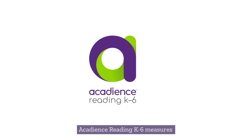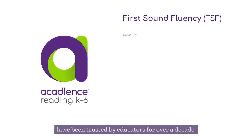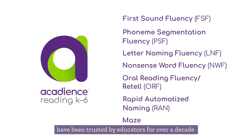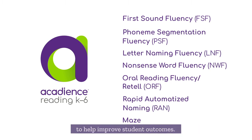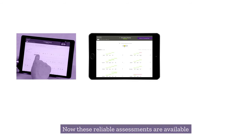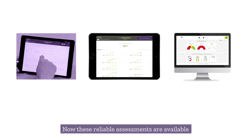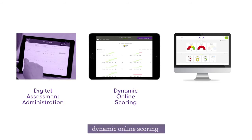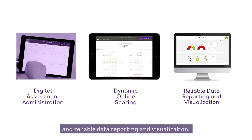Acadians Reading K-6 measures have been trusted by educators for over a decade to help improve student outcomes. Now, these reliable assessments are available in a platform that provides digital assessment administration, dynamic online scoring, and reliable data reporting and visualization.